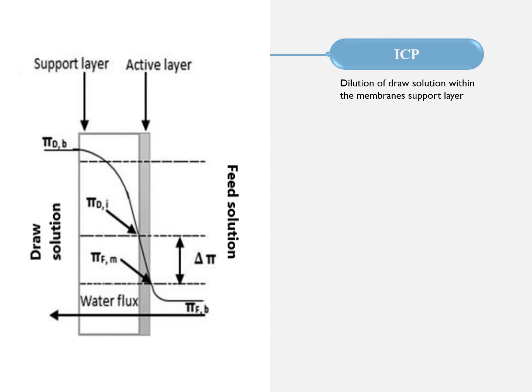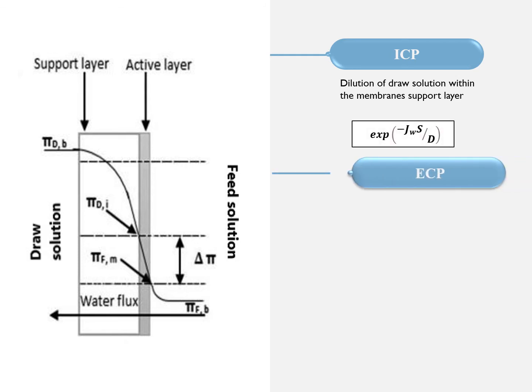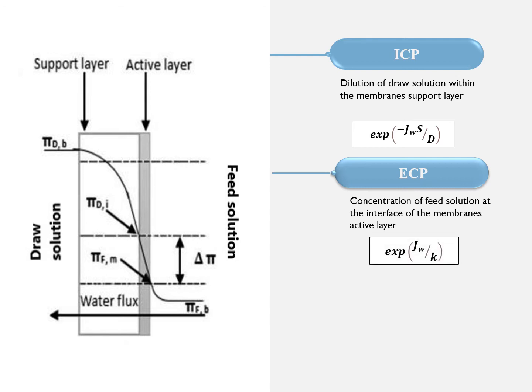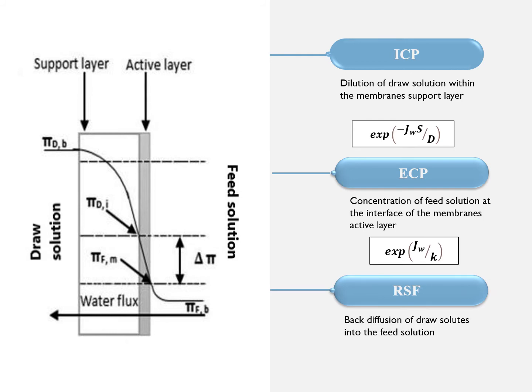Namely, internal concentration polarization (ICP), which is the dilution of draw solution within the membrane support layer, and external concentration polarization (ECP), which is the concentration of feed solution at the interface of the membrane active layer. Finally, the reverse solute flux, which is the back diffusion of the draw solutes into the feed solution.